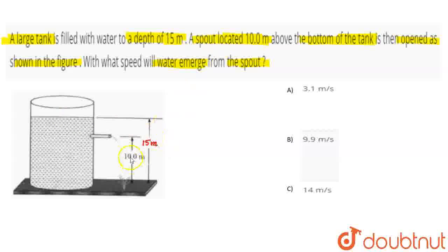A spout is located 10 meters above the bottom of the tank. So this is the bottom of the tank, and 10 meters above is where the spout is. This is the spout, the hole. We can call it the hole or the tap.